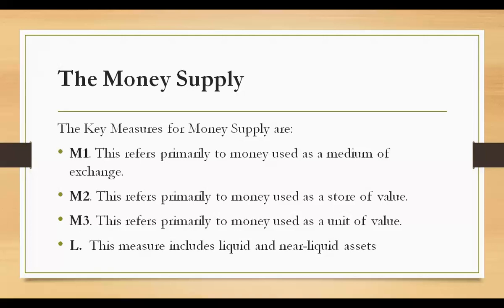Some common forms of public payment do not count as part of the money supply. Check payments from one person to another are not included because a check merely transfers money without being a net addition to the supply. Similarly, consumer credit cards are not included in the money supply — they are considered instant loans to consumers and therefore are not a net addition to the money supply.